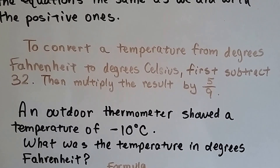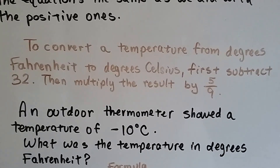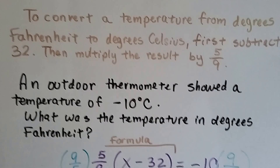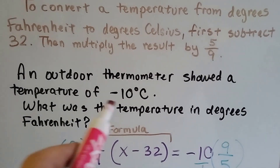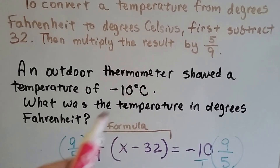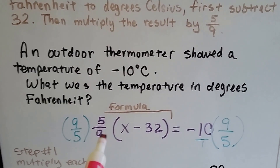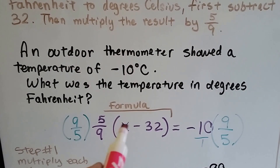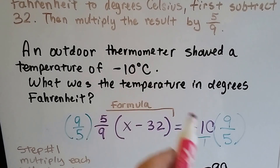To convert a temperature from degrees Fahrenheit to degrees Celsius, first subtract 32, then multiply the result by 5 ninths. We're going to go the other way around because we want to find out what negative 10 is. An outdoor thermometer showed a temperature of negative 10 Celsius — what was the temperature in degrees Fahrenheit? We're going to use the formula 5/9 times (x minus 32), and set it equal to negative 10 Celsius.